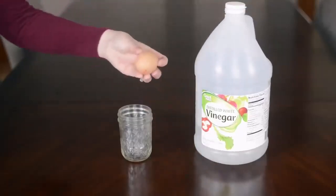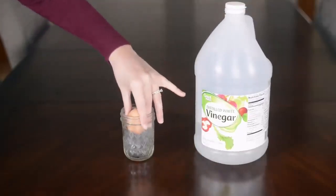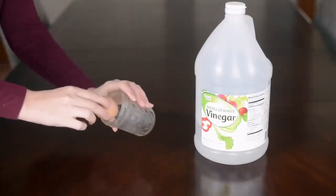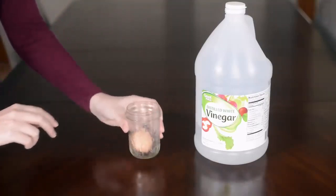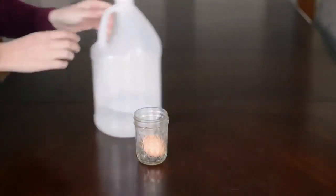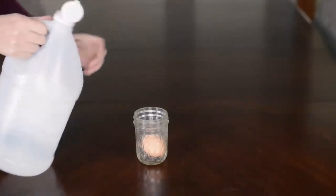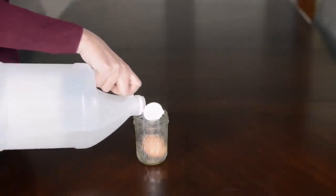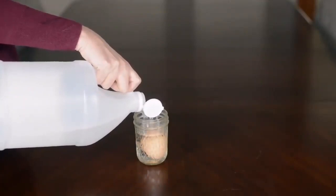This is vinegar, a raw egg, and a cup. Then you just put the egg in the cup carefully and fill it with vinegar to cover the egg completely. Then you let it sit for 24 hours.